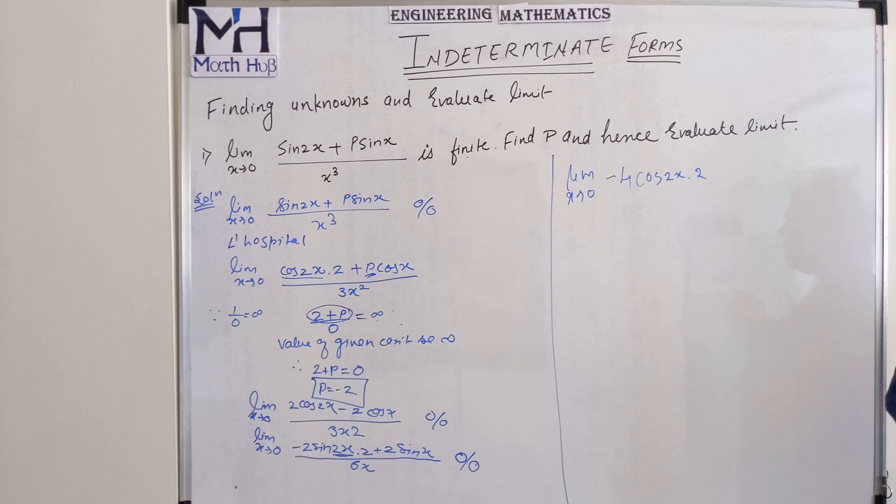So the value of the given function is minus 1, and the value of p is minus 2. This is the answer to this question. I hope you understand this question.